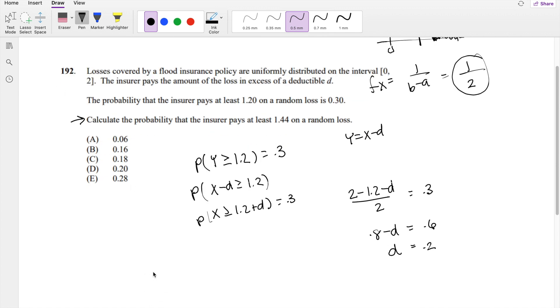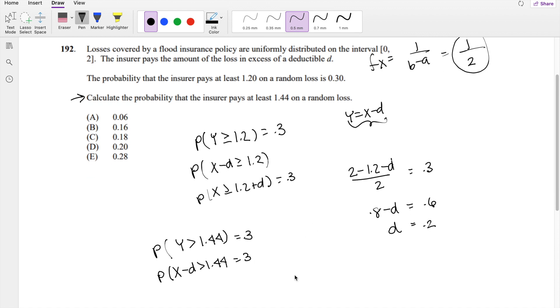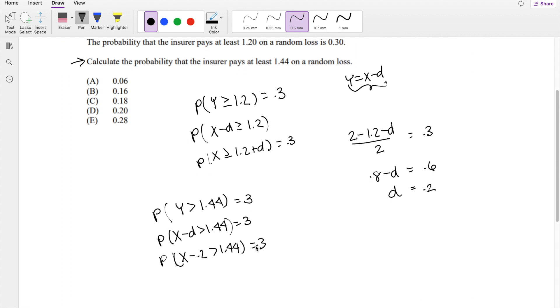All right, so knowing that, the question they're asking for is calculate the probability that the insurer pays at least 1.44, right? So again, plugging in that y, it's basically in terms of the loss, it's talking about the probability that x minus D is greater than 1.44. Where deductible we know to be 0.2, x minus 0.2 is greater than 1.44. So then finally, this is the same thing as saying, what is the probability x is greater than 1.64? Oh wait, we don't know what this is equal to, this is what we're looking for.